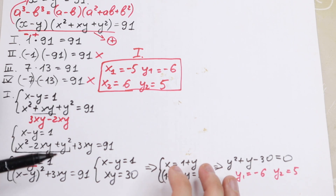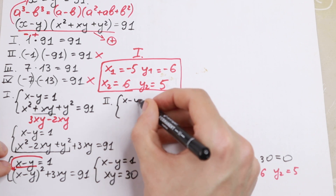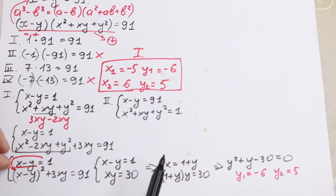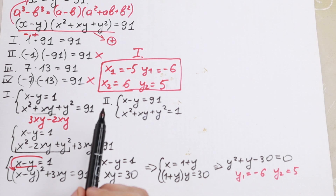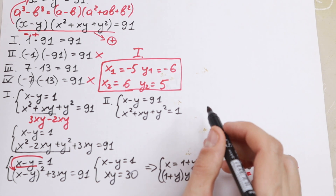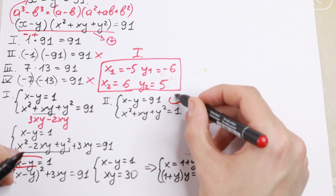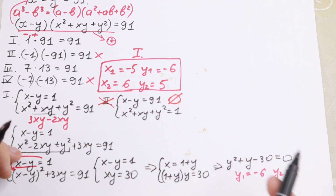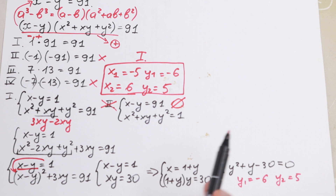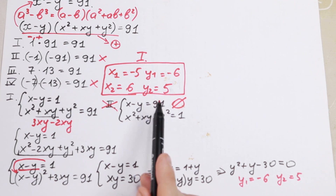For the second case, we swap the factors: x minus y equals 91 and x² plus xy plus y² equals 1. Applying the same logic gives a negative discriminant, so the square root is negative. This system has no real solutions — only complex roots. We write: no roots in the second case.